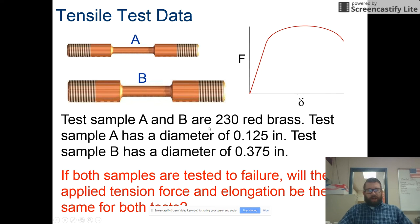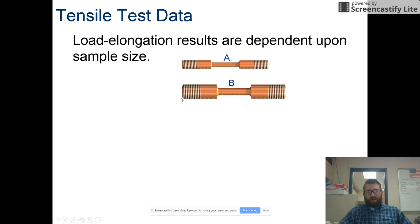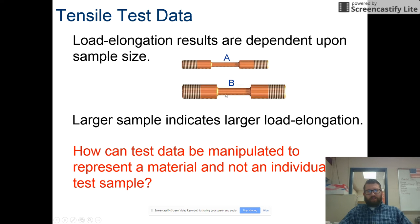Consider two red brass samples: sample A has a diameter of 0.125 inches and sample B has a diameter of 0.375 inches. If both are tested to failure, will the applied tension force and elongation be the same? The answer is no, because B has a greater cross-sectional area than A, so it will take more force to pull B apart.